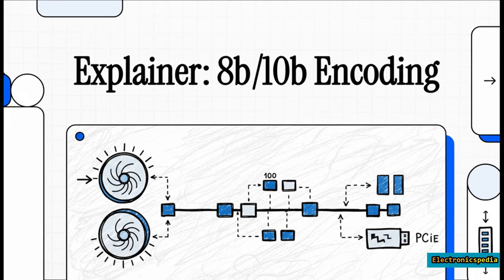Welcome to The Explainer. Today we're going to decode a foundational piece of technology that pretty much makes our high-speed digital world possible: 8B/10B encoding. It's the hidden genius behind some of the most important standards we've ever used, from the early days of PCI Express all the way to USB 3.0.